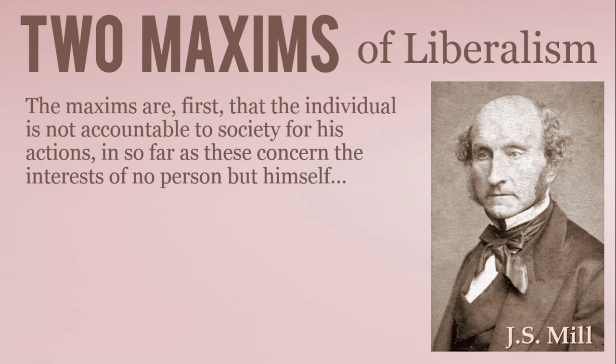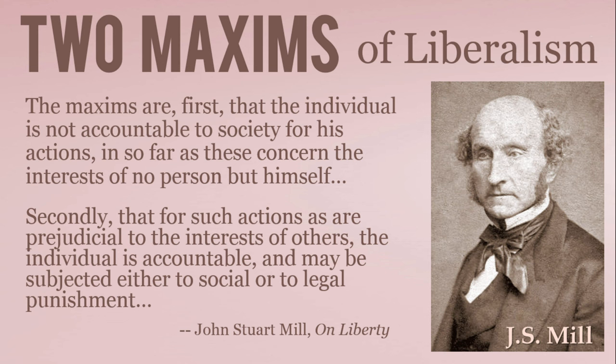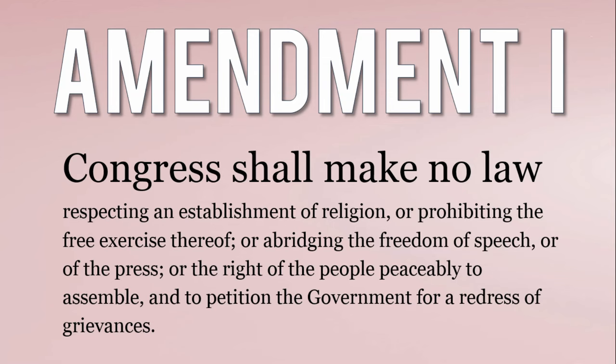John Stuart Mill wrote in the language of negative liberty when he described his two maxims of liberalism. First, the individual is not accountable to society for his actions insofar as these concern the interest of no person but himself. Second, for such actions as are prejudicial to the interest of others, the individual is accountable and may be subjected to social or legal punishment. So, liberty is really about being able to do what you want as long as you are not hurting anyone else.